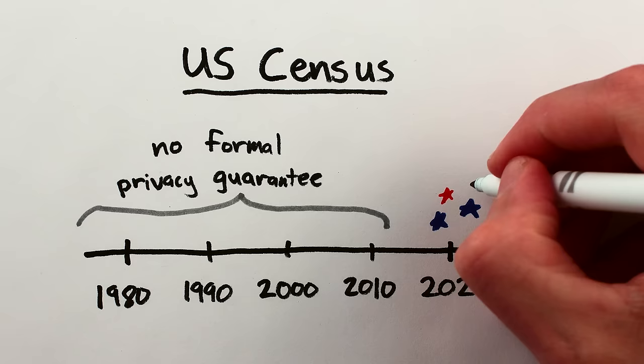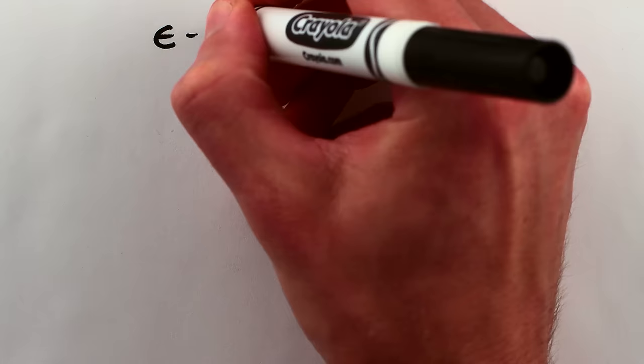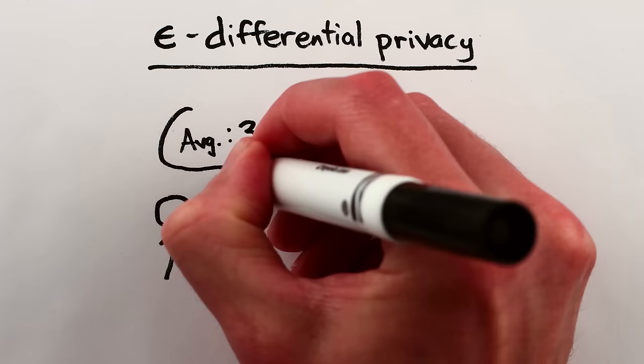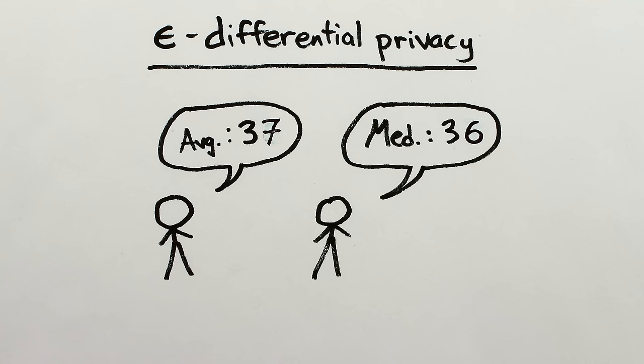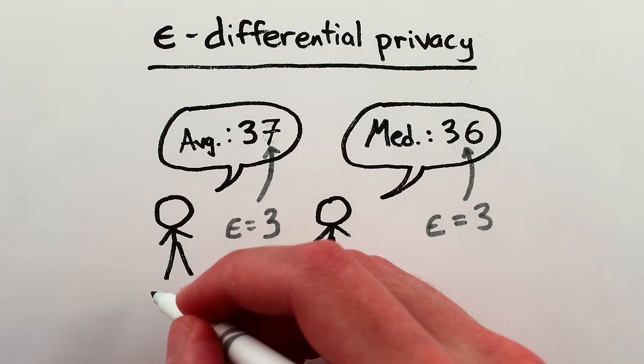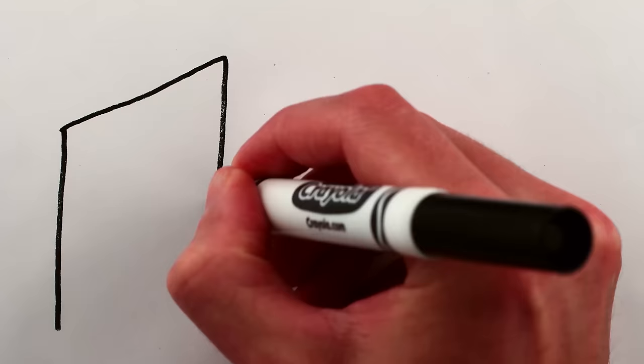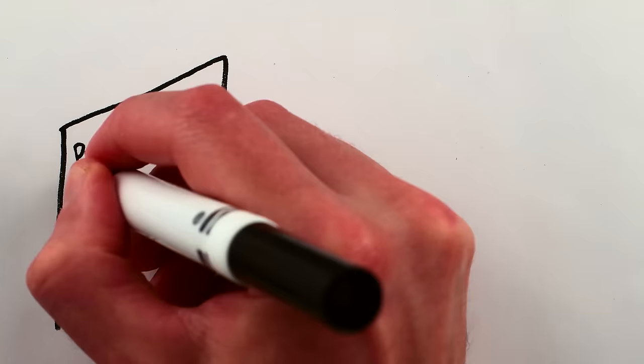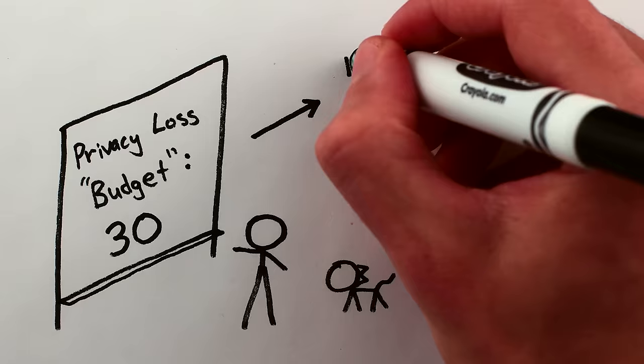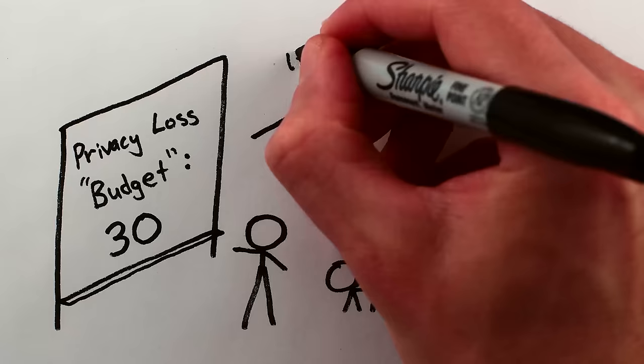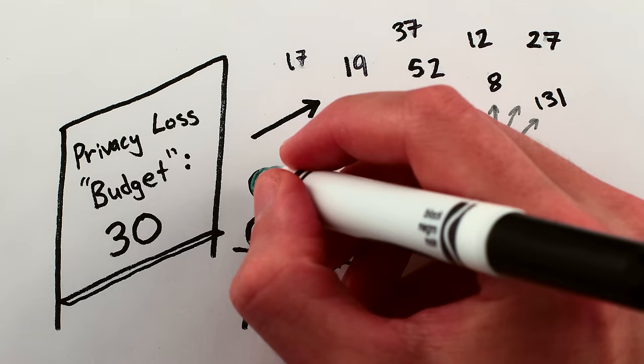The 2020 Census is a different story. It will, for the first time, be using mathematically rigorous privacy protections. One of the biggest benefits of the mathematically rigorous definition of privacy is that it reliably compounds over multiple pieces of information. Like, if we publish both an average age and median age, each with a privacy loss factor of three, then the privacy loss factor for having released both pieces of information is at most six. This means you can decide on a total cumulative amount of privacy loss you're willing to suffer, and then decide whether you want to release, say, ten pieces of information each with one-tenth that total privacy loss and less accuracy, or if you want to release one piece of information with the full privacy loss and a higher level of accuracy.